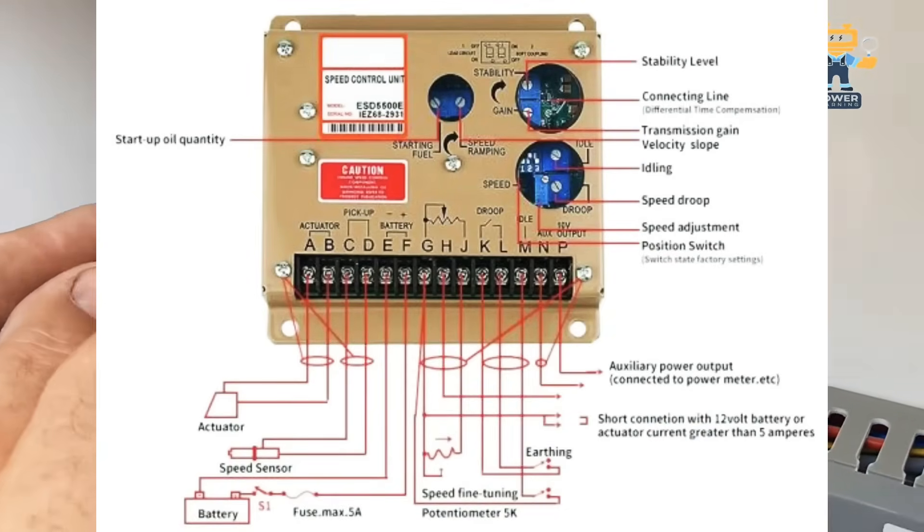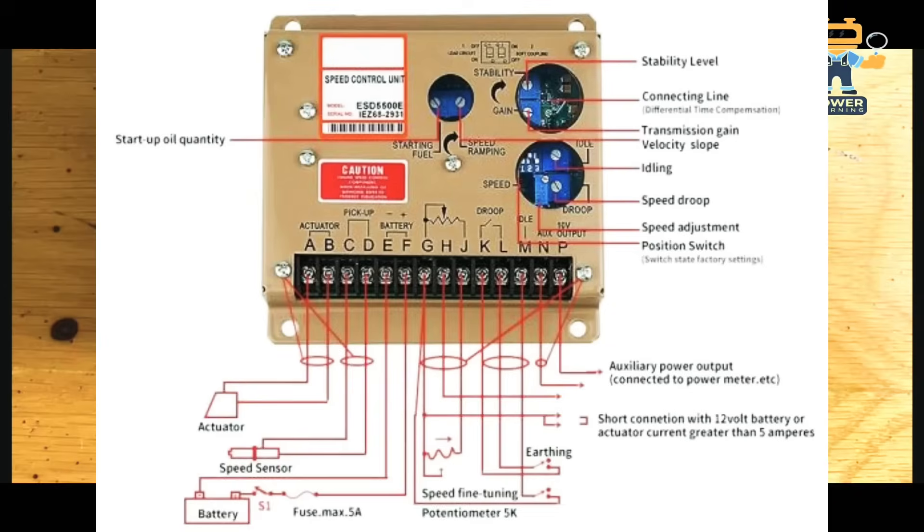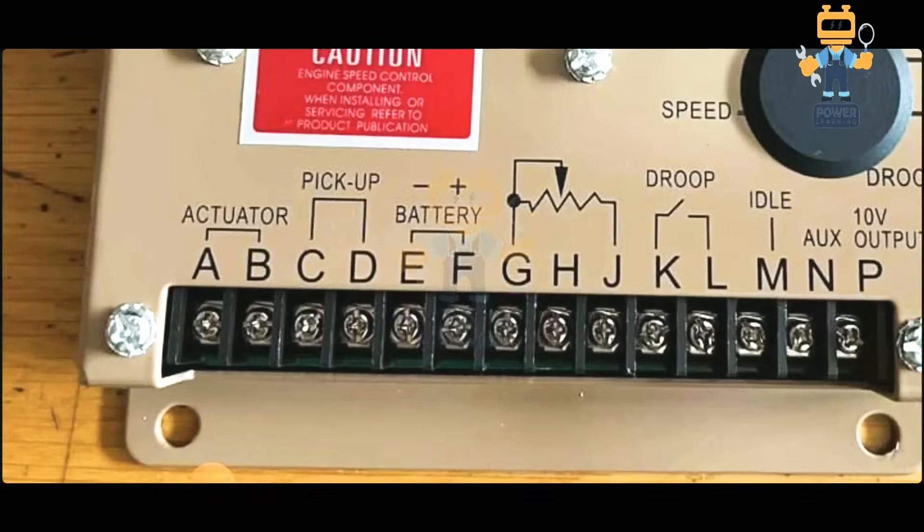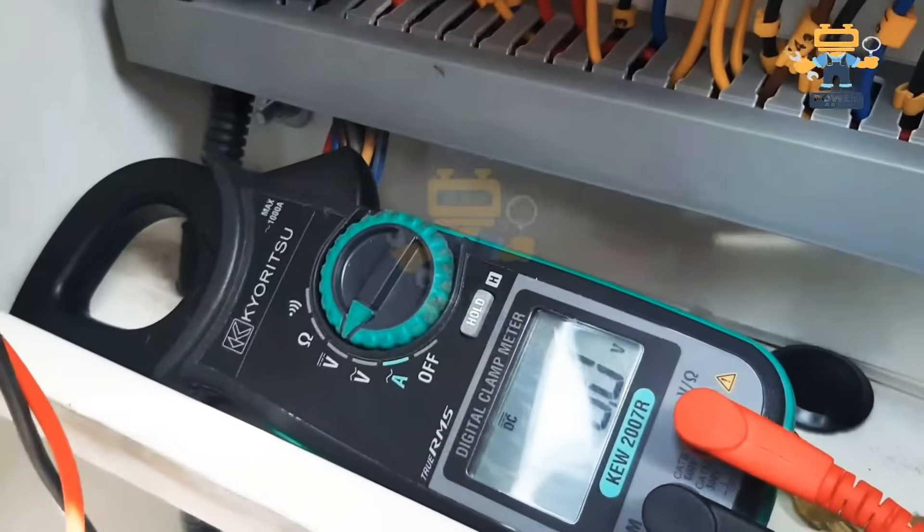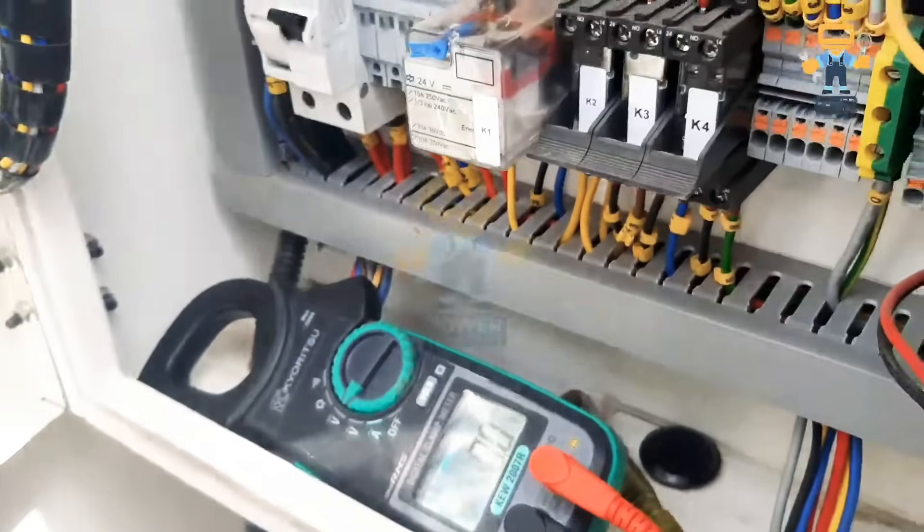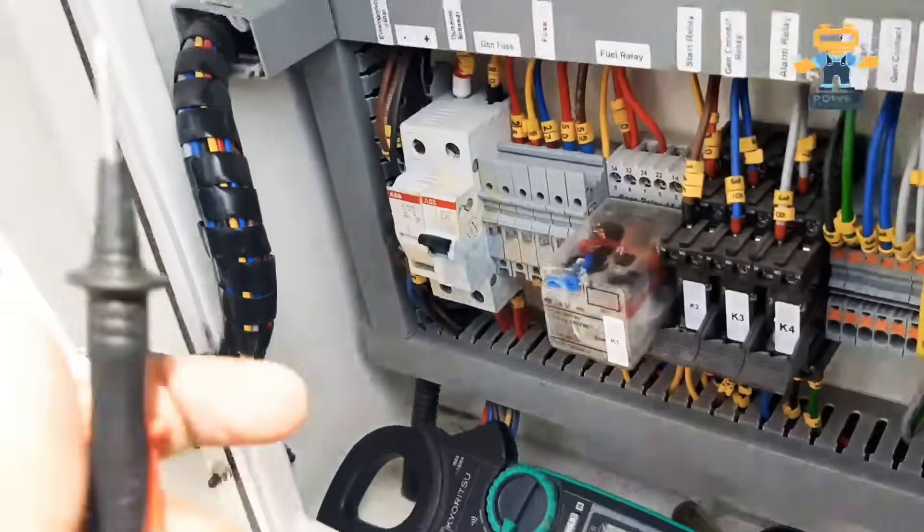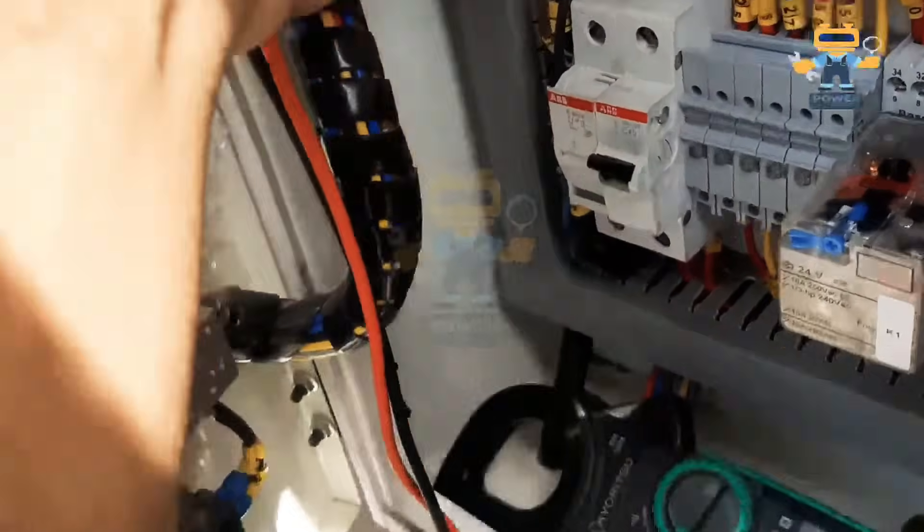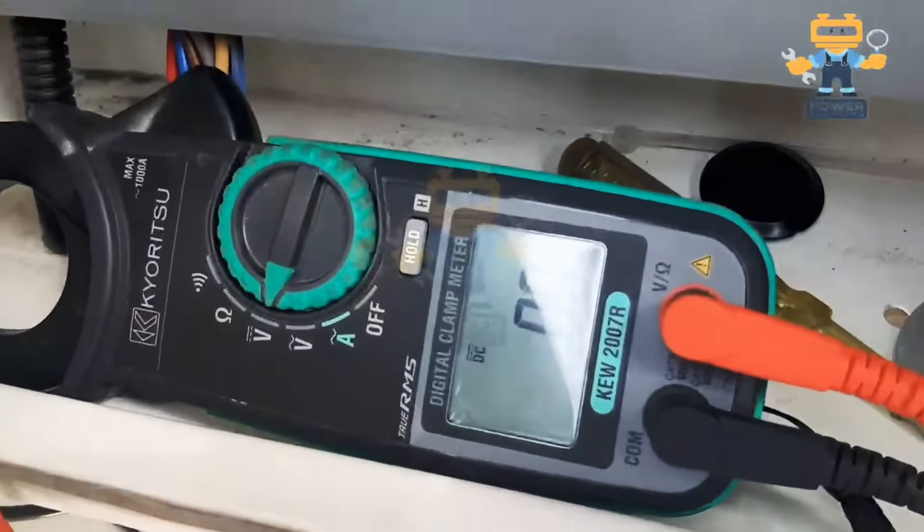After getting this input signal, this input voltage, the internal PLC electronic card of this speed controller gives output signal at actuator terminals. At actuator terminals it gives stable DC output from this actuator. We connect two wires towards our actuator.